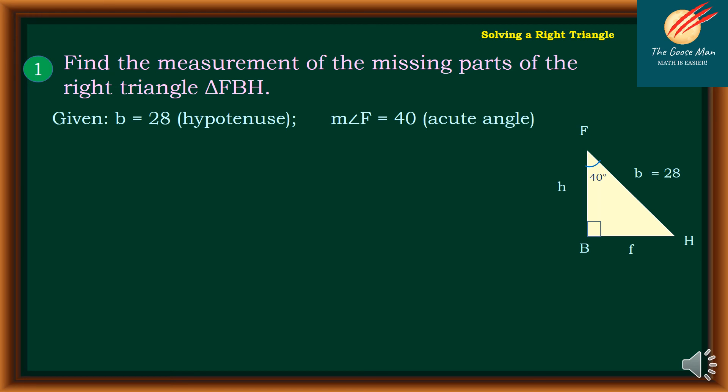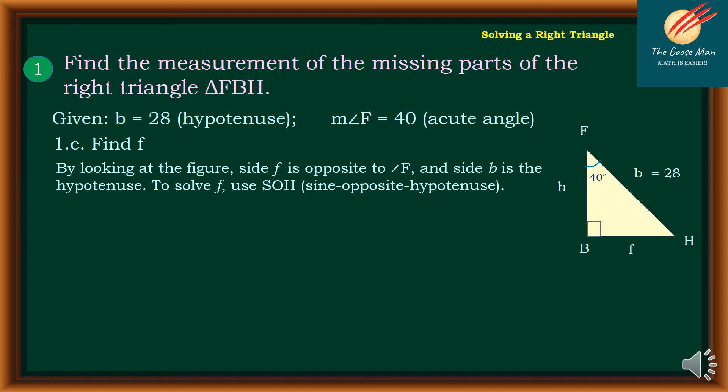To continue with our exercise, this time we will look for f, or side BH. By looking at the figure, side f is opposite angle F and side b is the hypotenuse.